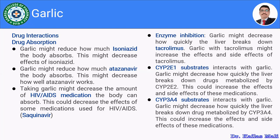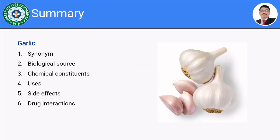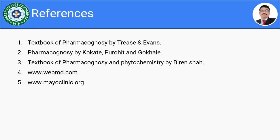These are the drug interactions of garlic. In this session, we discussed the drug garlic — briefly covering its synonyms, biological source, chemical constituents, uses, side effects, and drug interactions. Let us see the references. Thank you very much.